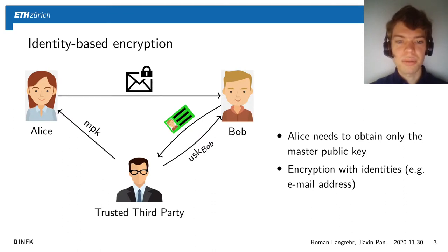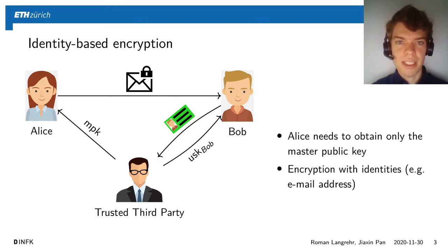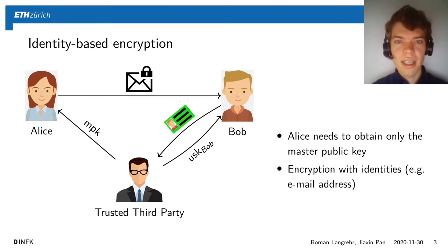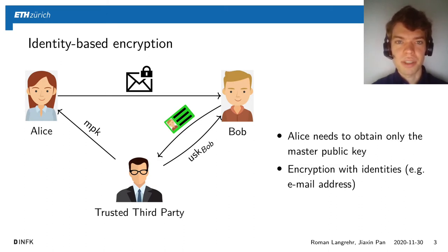Suppose Alice wants to send a message to Bob and use identity-based encryption to encrypt it. She needs a master public key issued by some trusted third party and an identity of Bob to encrypt the message. An identity can be any string that uniquely identifies a recipient, for example an email address. To decrypt, Bob proves to the trusted third party that he is the legitimate owner of his identity, and then the trusted third party gives him a user secret key for his identity. With this user secret key he is able to decrypt messages encrypted for his identity but not other messages.